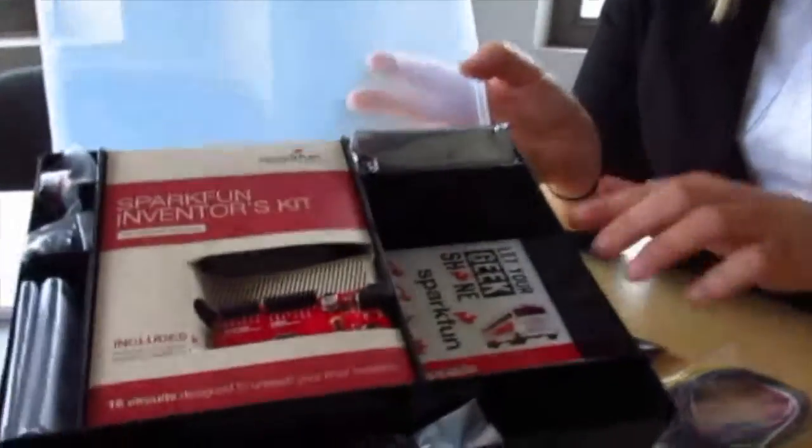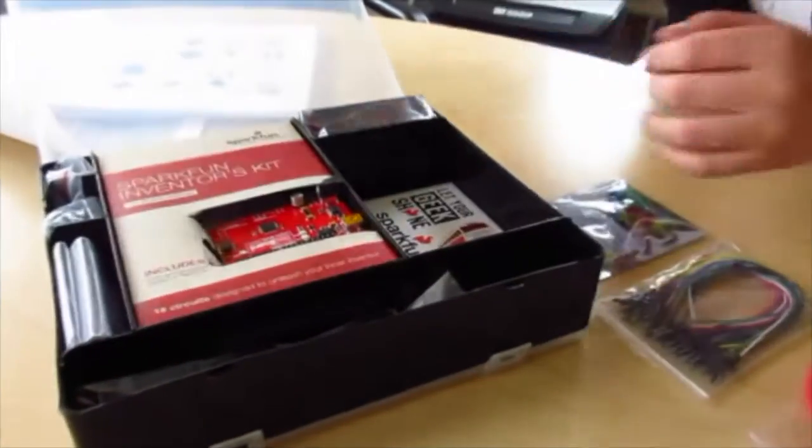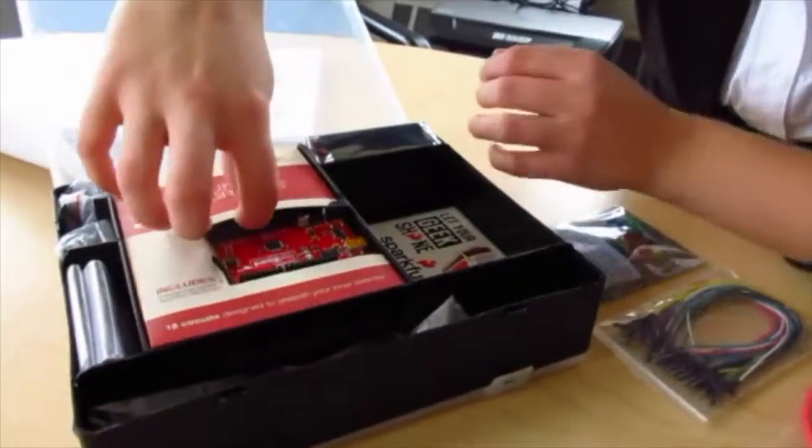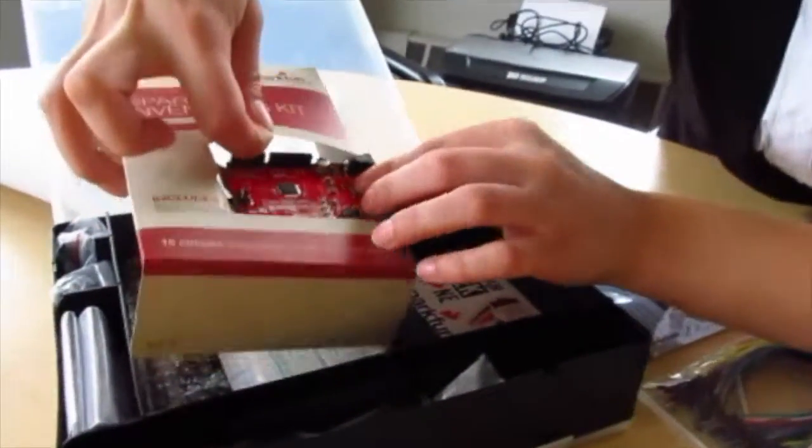The parts in the side compartment all are different pieces that you'll be plugging into your Arduino Uno. The most important part of your kit is the centerpiece. This is your Arduino Uno. We're going to pull this out and set it here.